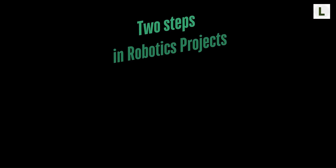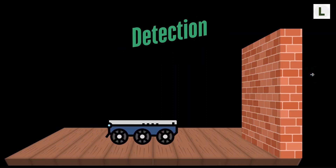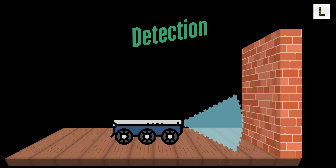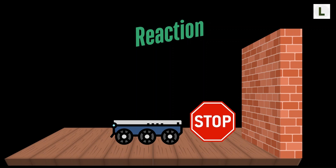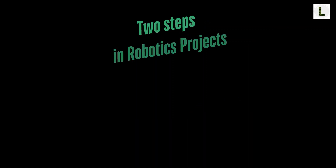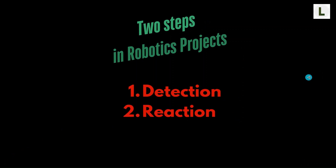Before we get back into the line follower project, I want to spend a minute or two explaining a general framework that you can use to think about any of your robotics projects. In any robotics project, there will generally be two steps. First, there's something that we want the robot to detect or sense. In this example, we want the robot to detect obstacles in its path. Once we've detected it, based on the detection, we want the robot to decide how to react. This is the reaction step. So there are two main steps: the detection step and the reaction step. Typically, the robot performs this in a loop until we want it to stop.